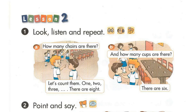Page 26, Lesson 2, Activity 1. Look, listen and repeat. A. How many chairs are there? Let's count them: 1, 2, 3. There are 8. B. And how many cups are there? There are 6.